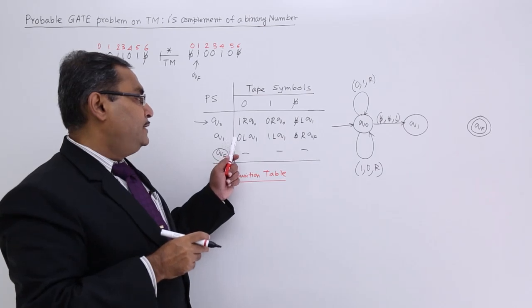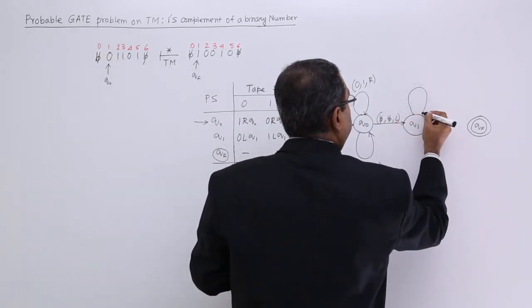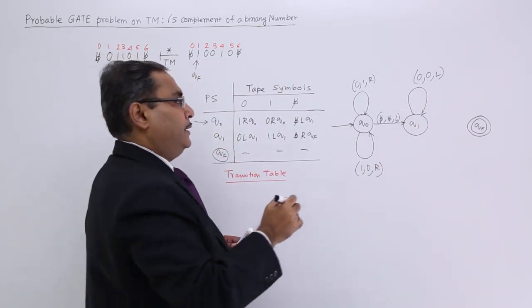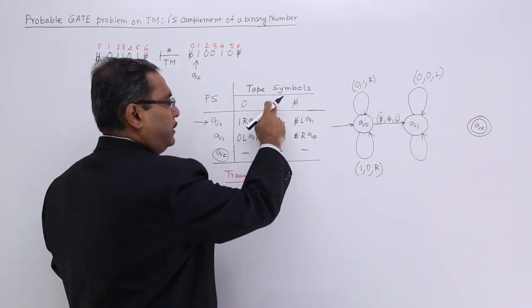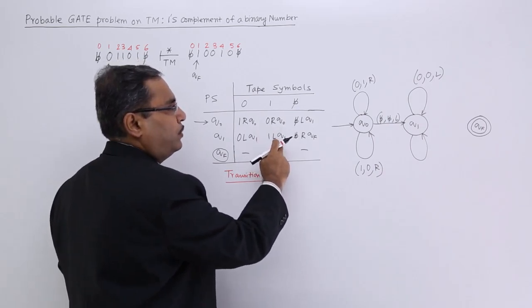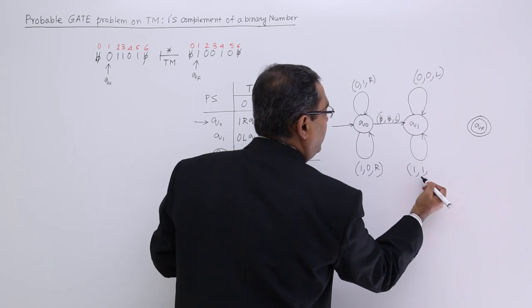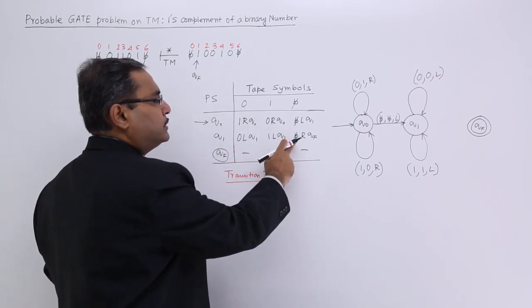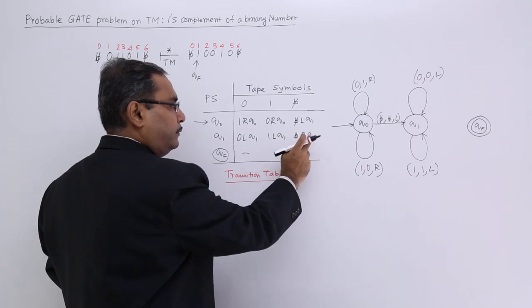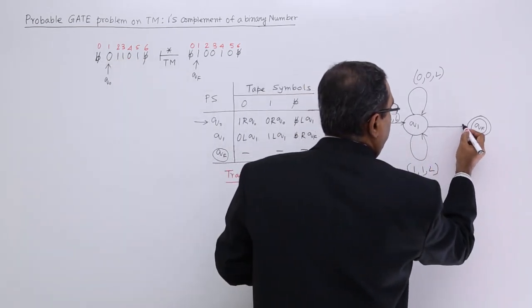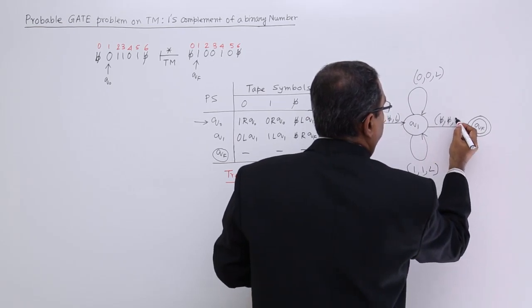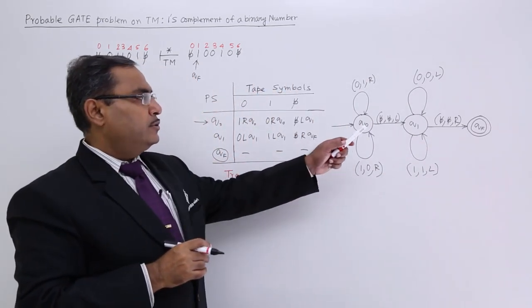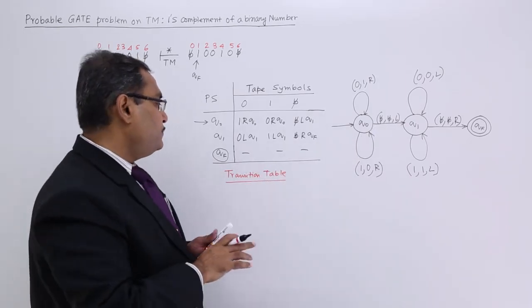In Q1, if it gets 0, then 0 will be written as 0, it will move towards the left and remain with the state Q1. If Q1 gets 1, then 1 will be written back, it will keep moving towards the left and remain with the state Q1. If Q1 gets blank, then it will move towards QF — blank, move right, next state QF. At QF, no transition is defined, so I am not having any outward edge from QF. This is my transition system.